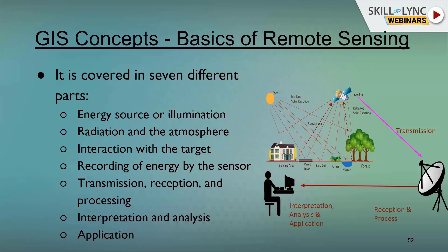The transmission station in India is situated in Andhra Pradesh — for ISRO satellites, it is in Hyderabad. They collect the data, and from that data you get satellite imagery, which you can download from ISRO's website, NASA's website, and many other open-source websites. This is the basic process of remote sensing.